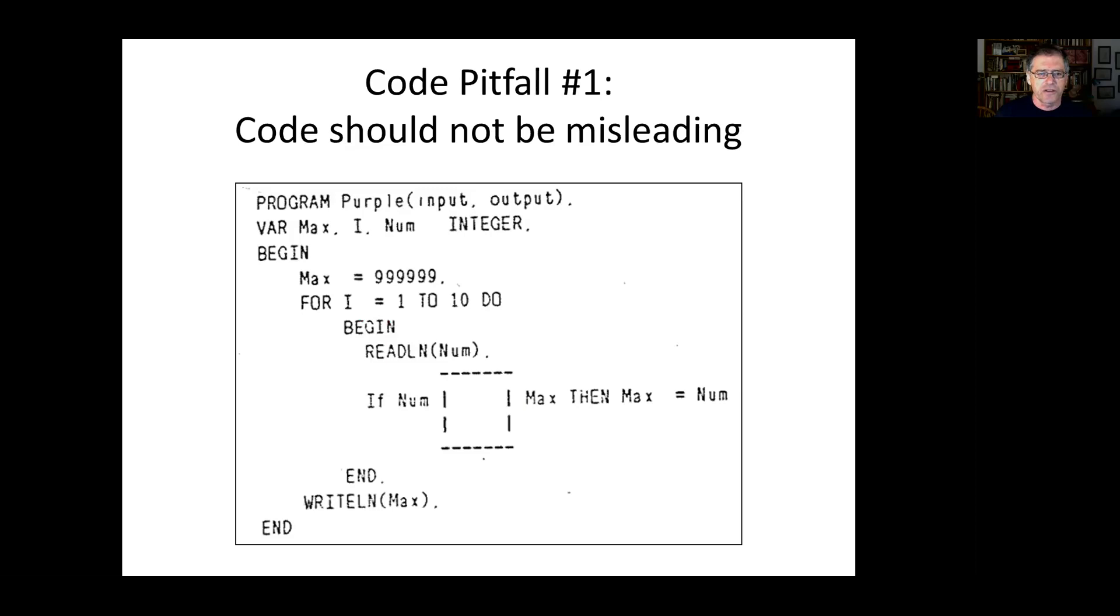Here's another example. This example is actually misleading. What this does is to calculate the minimum of a set of input numbers. But the variable used to hold the result is called max instead of min. This could point subjects in the wrong direction and mislead them to think that it calculates the max instead of the min.